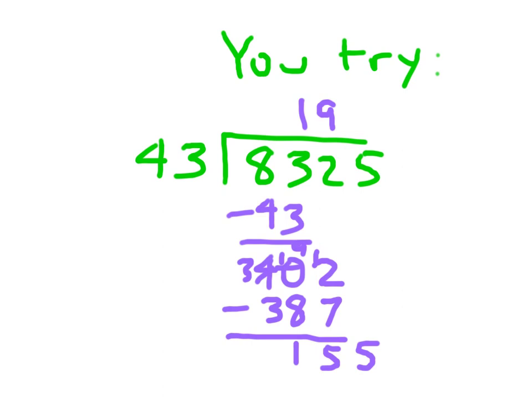My next step is to bring down the 5. How many times can 40 go into 155? That's my thought process for choosing what number to put next to that 9 and above the 5. I would think it's 3. 3 times 3 is 9. 3 times 4 is 12, so I have 129. If I subtract those two numbers, I get 26. 26 is our remainder.